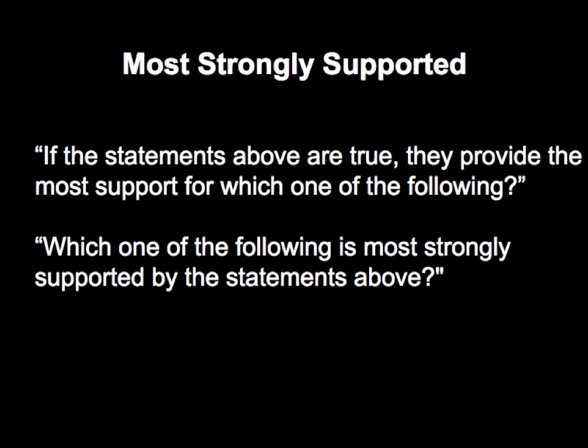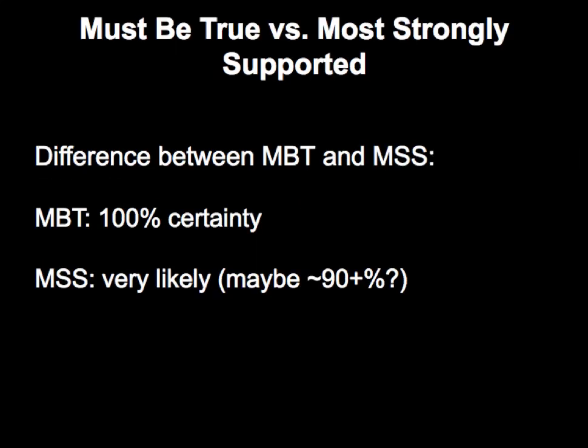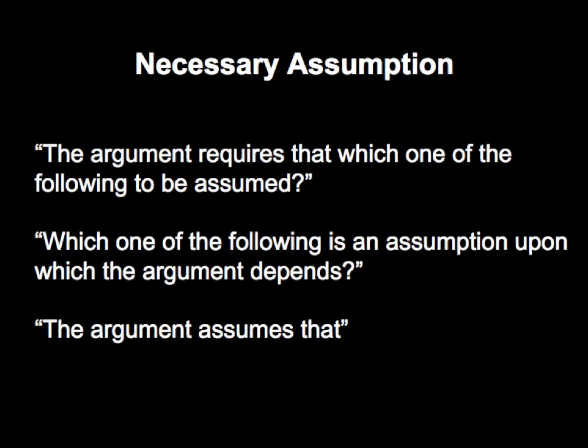Most strongly supported questions, on the other hand, typically have the phrase 'most strongly supported' in the question stem. Must-be-true questions are asking for 100% certainty, whereas most strongly supported questions are asking for something that's incredibly likely to be true, but not necessarily 100% guaranteed — think of it as very likely, maybe 90% likelihood or higher.